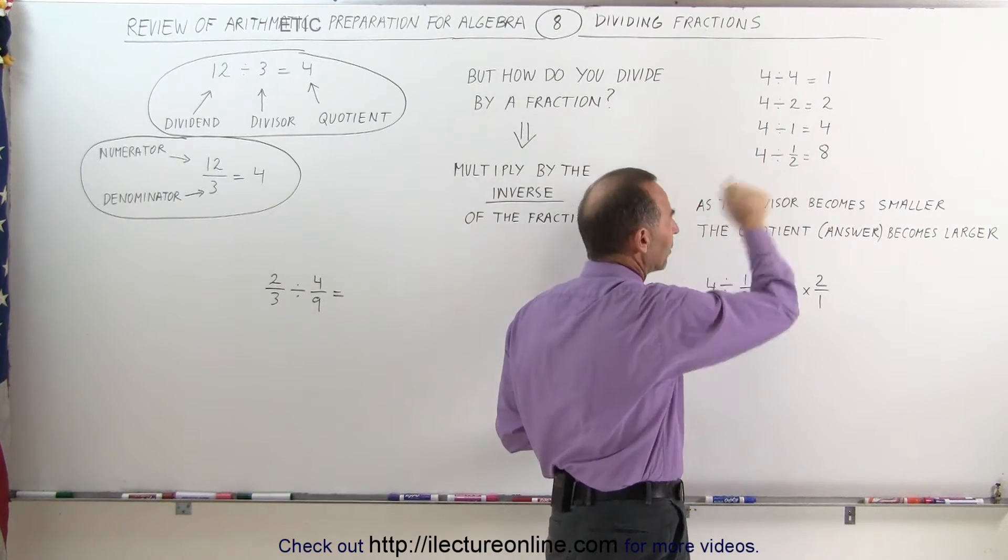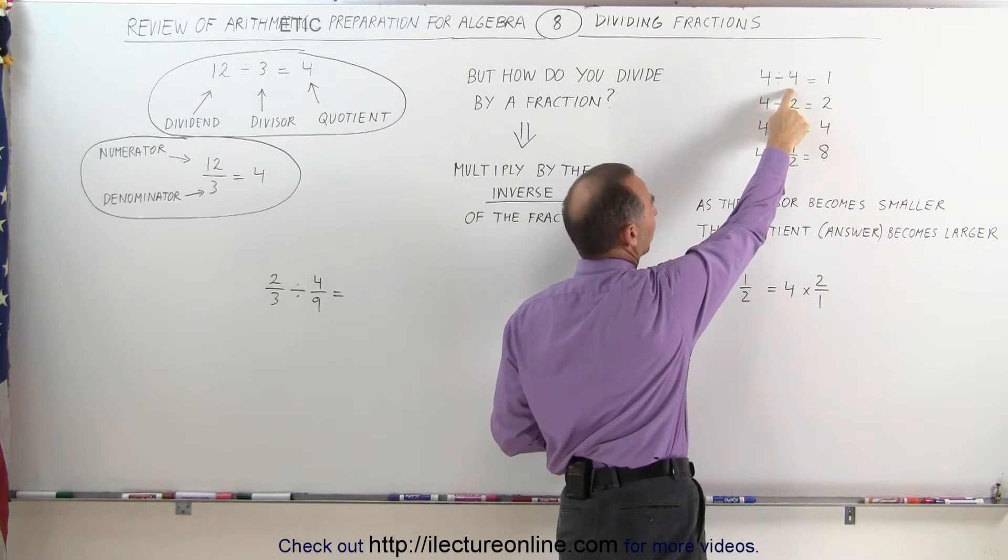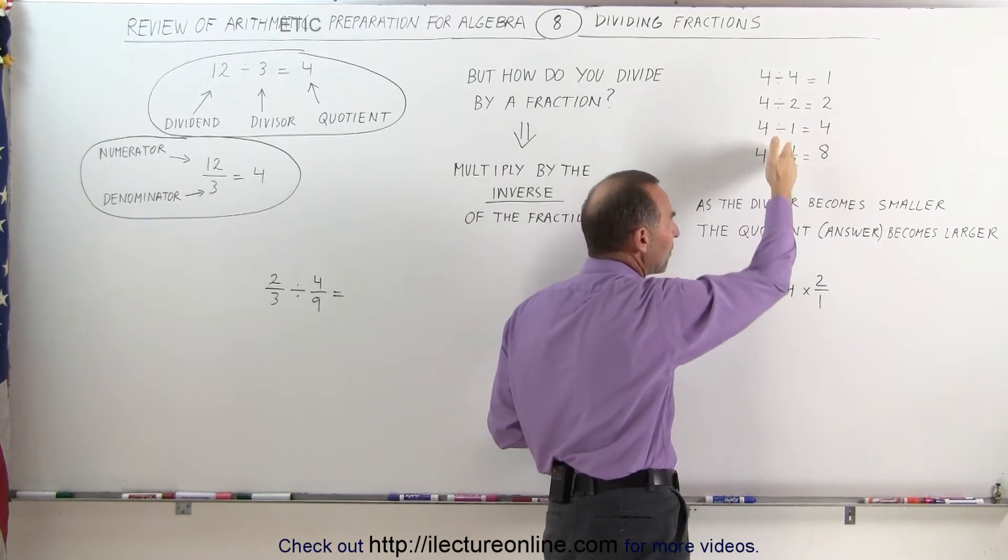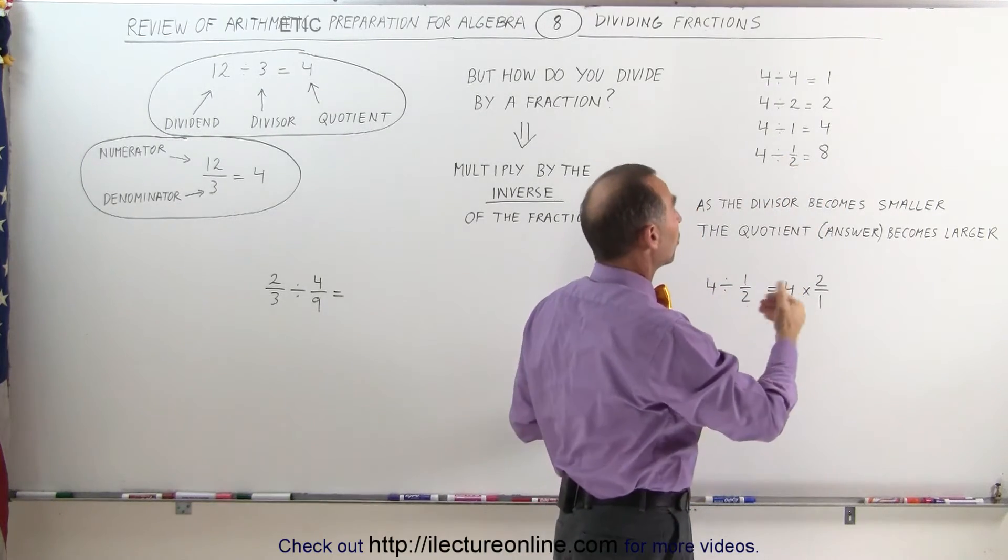So what we see here in this pattern is that as the divisor becomes smaller, and here's your divisor, 4, 2, 1, 1 half, as we make it smaller, the answer, called the quotient, becomes larger.